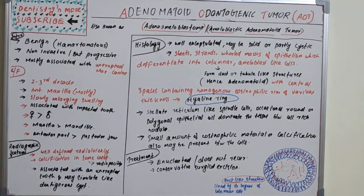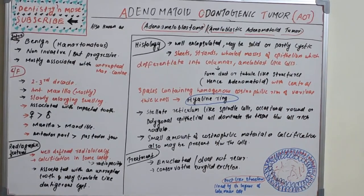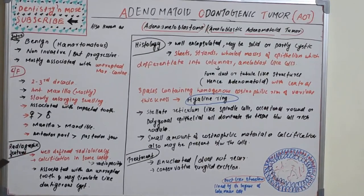Regarding radiographic features, AOT presents as a well-defined radiolucent lesion. In some cases, areas of calcification develop, which appear as radio-opacities on the radiograph. It is associated with an unerupted tooth and can sometimes be mistaken for a dentigerous cyst radiographically, as a dentigerous cyst is also associated with an unerupted tooth.